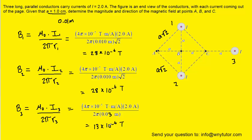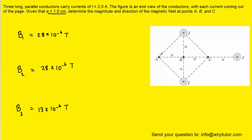Next, we need to consider the direction of the magnetic field produced at point A, and to do that we're going to use the right-hand rule. Each wire has the current pointing out of the plane of the paper — the dots in the center of each wire indicate current flowing out of the page. Stick your thumb out of the plane of the screen pointing towards yourself and make a fist with your fingers. You'll notice that your fingers would be moving in a counterclockwise fashion.